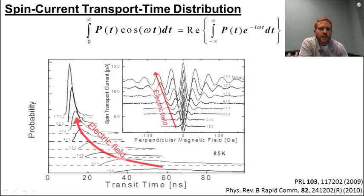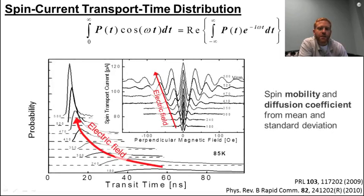In this example, we can see the effects of increasing the electric field. Oscillation period increases and the number of oscillations themselves grows. But the transforms clearly show that this is a result of smaller mean transit time and standard deviation.